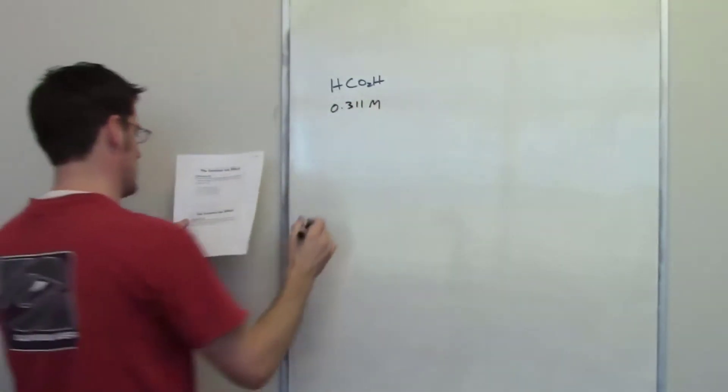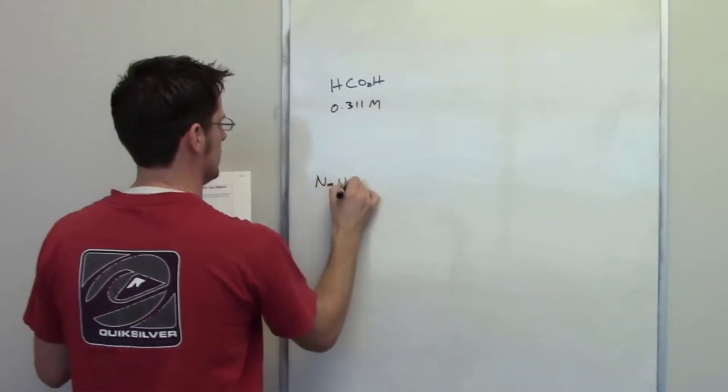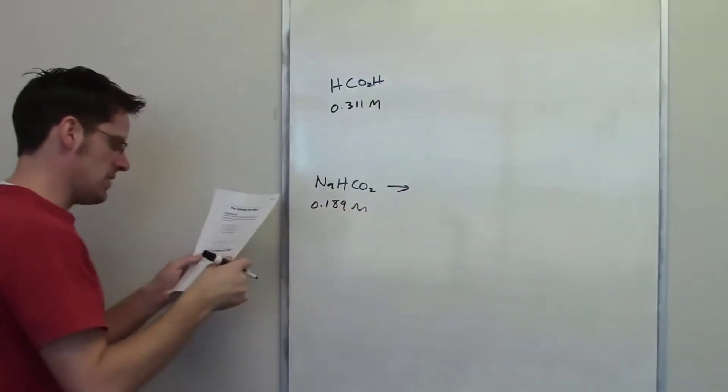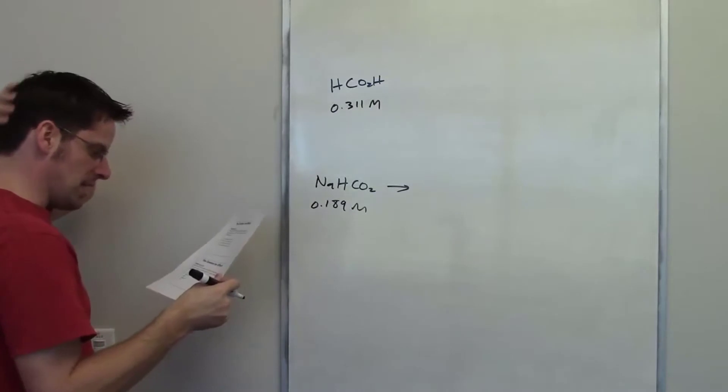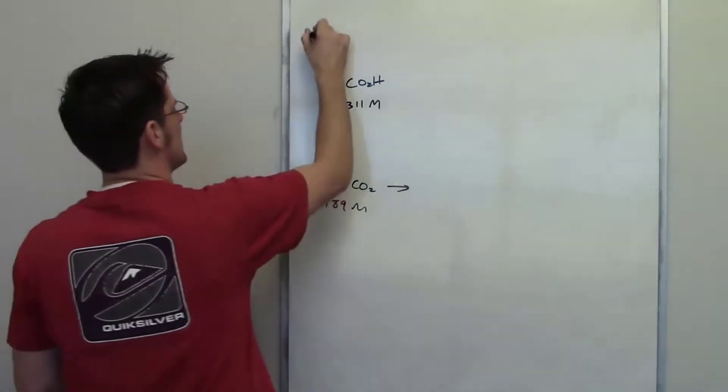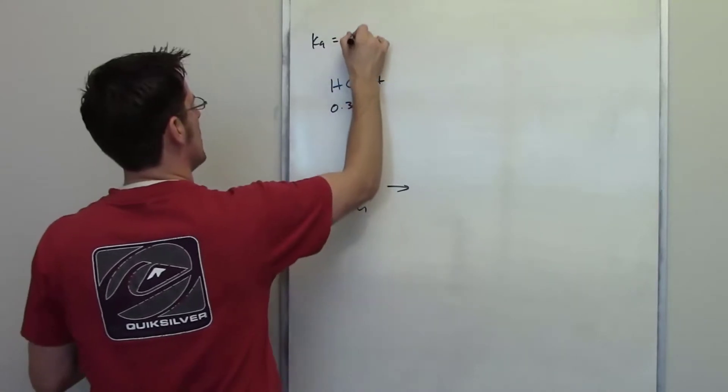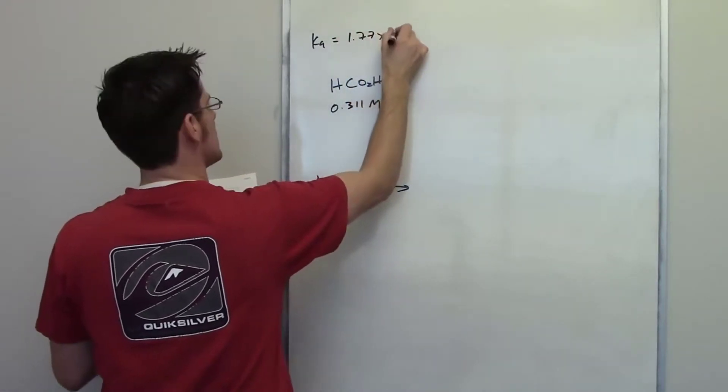It says separately that we also have sodium formate, and it tells us the concentration of that is 0.189 molar. It then asks us to calculate the final pH of this solution, and it gives us the Ka value of formic acid as being 1.77 times 10 to the negative fourth.